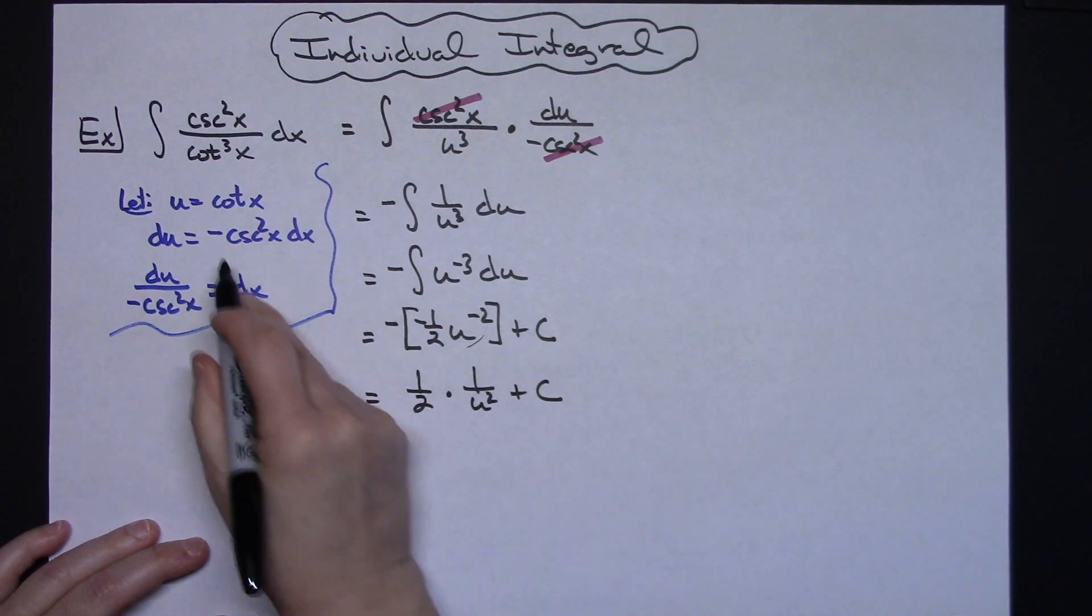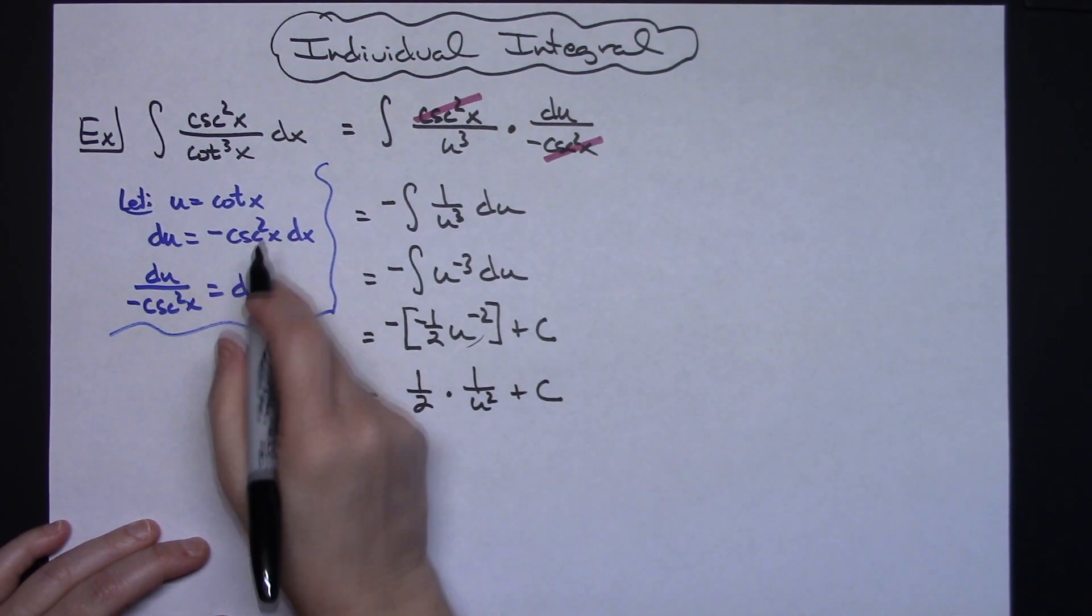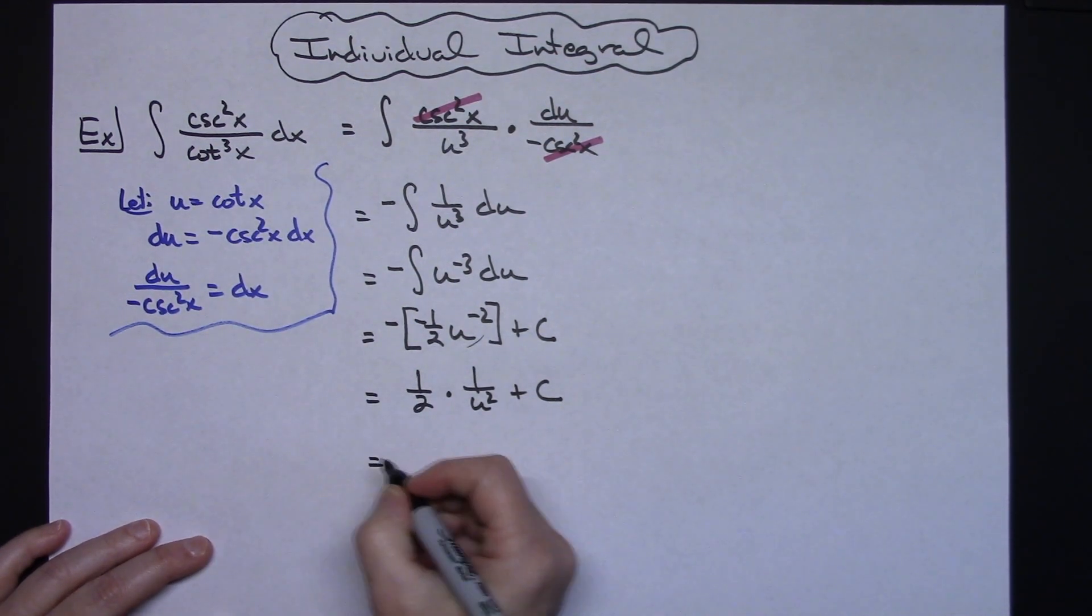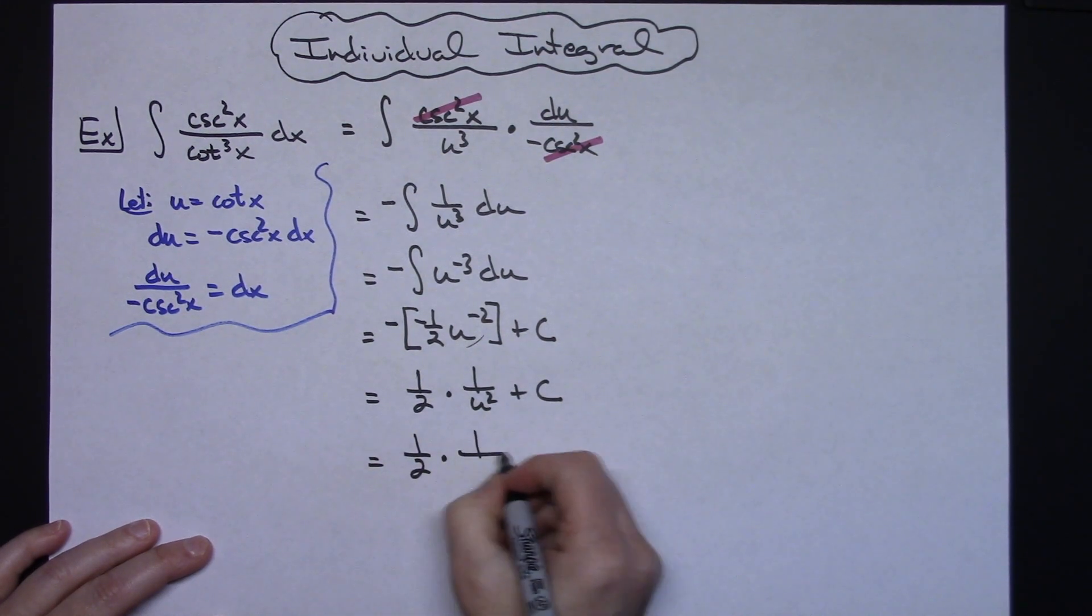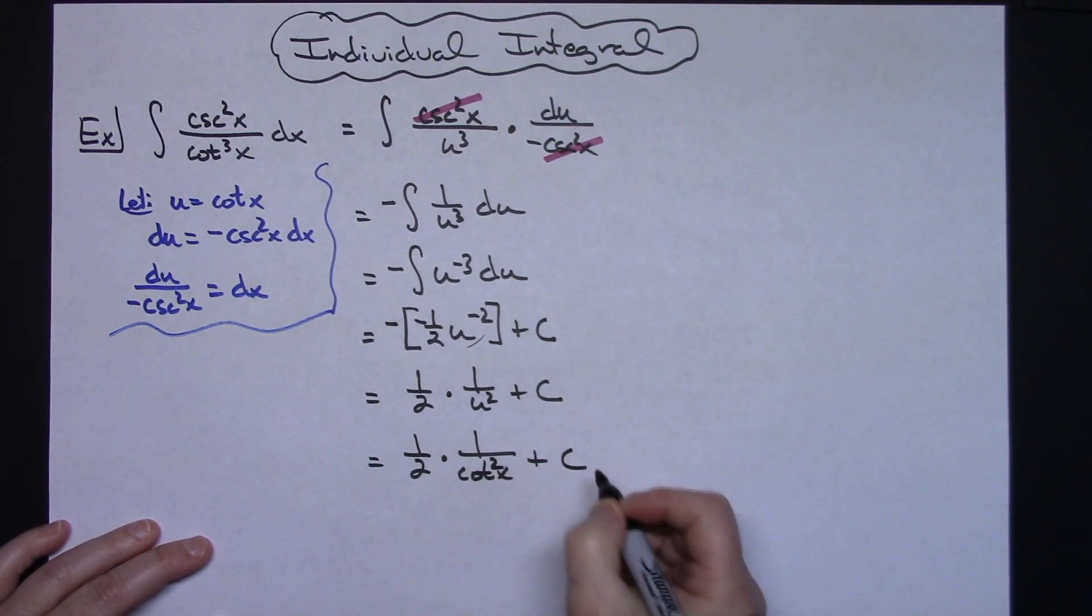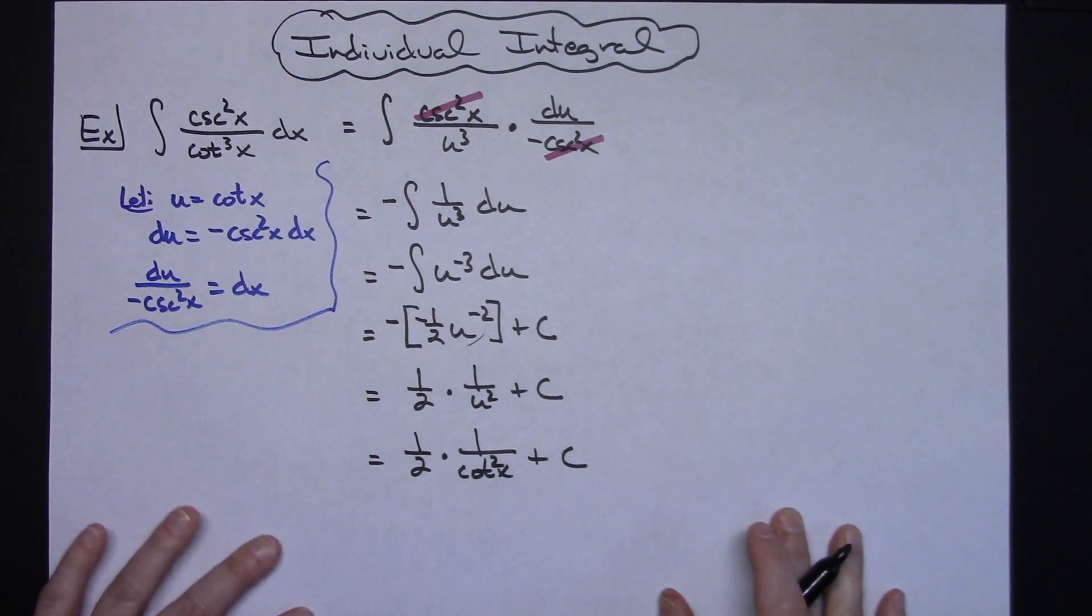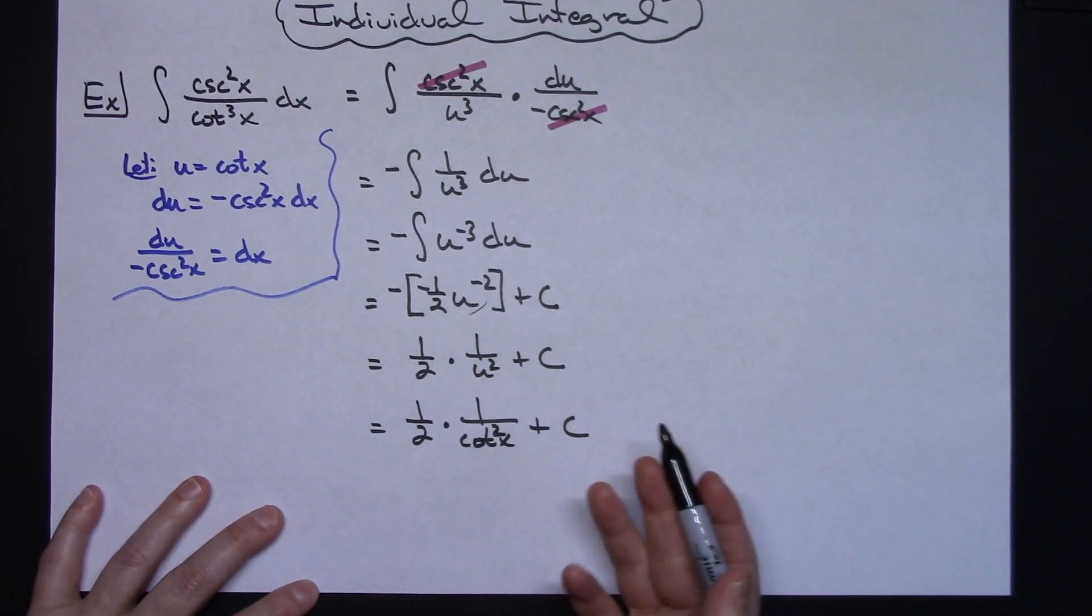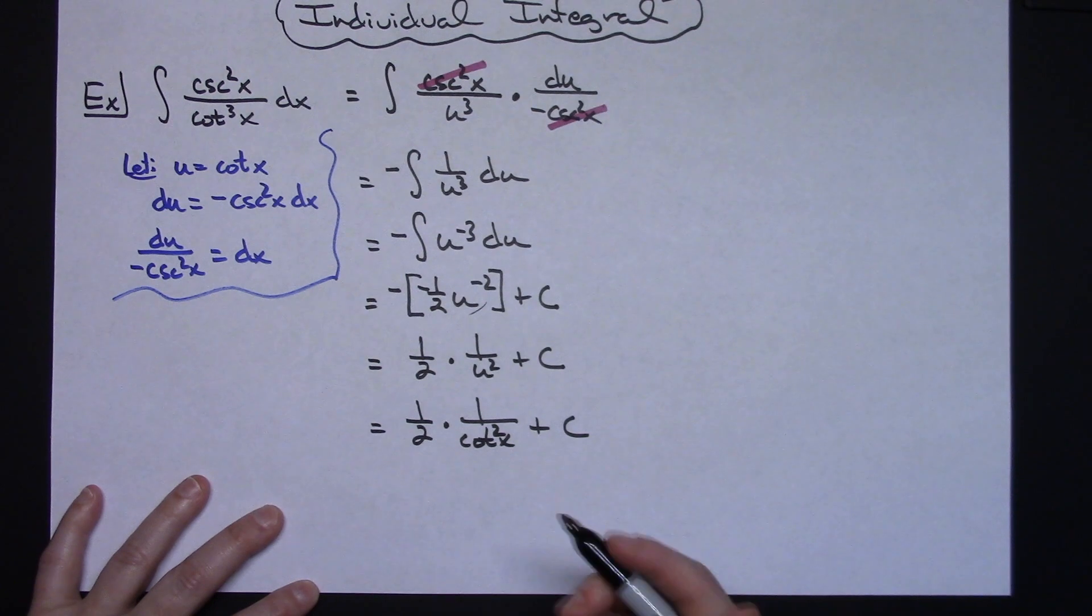At this point I'm going to go ahead and put my u back in. u is cotangent x. So I'm going to have a 1 half times a 1 over cotangent x squared plus c. Now at this point technically are you done? How far do you have to go?